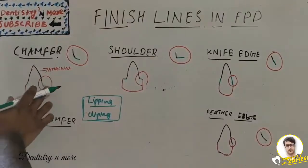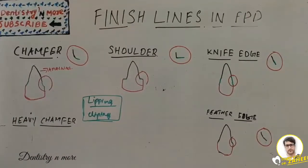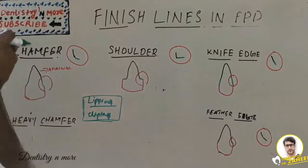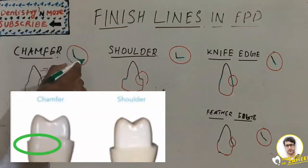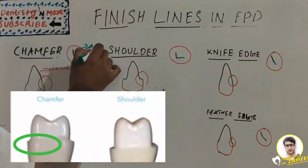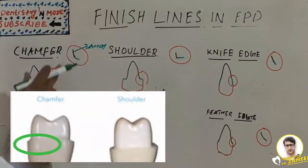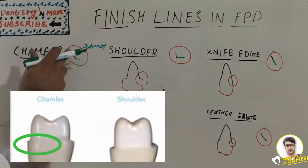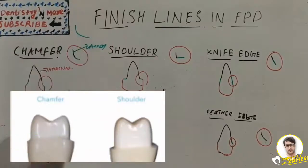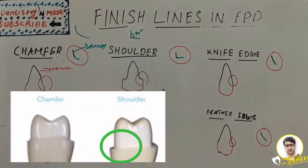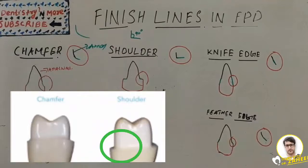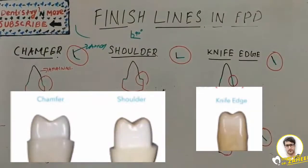Chamfer is a finish line that possesses a curved slope from the axial wall to the margin. The axial wall meets the gingival wall with a curved slope. In contrast, a shoulder has a 90-degree angle between the axial wall and the gingival wall. Knife edge has almost no such angulation — it is almost a straight line.